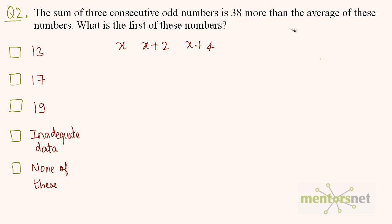This is because take any two consecutive odd numbers — say 3, 5, and the next consecutive odd number is 7. The difference between two consecutive odd numbers is 2. So x, then add 2 to get the next, and again add 2 to get the next consecutive odd number. So we have our three consecutive odd numbers. Their sum is 38 more than the average of these numbers.